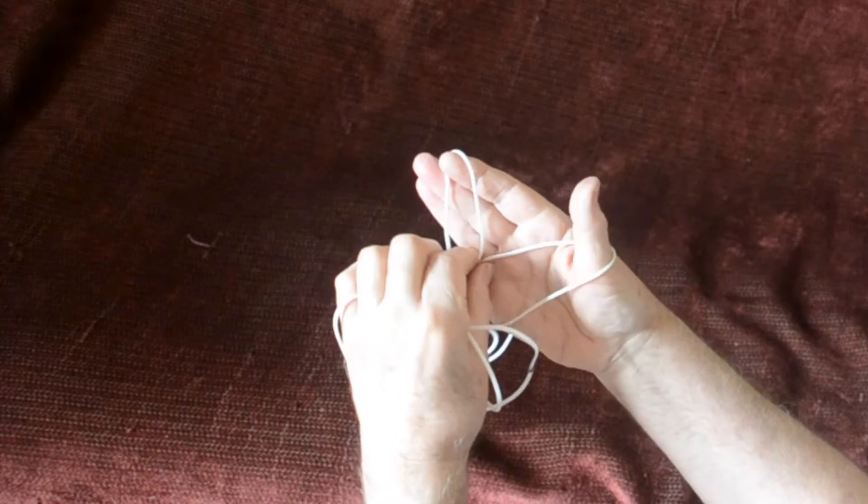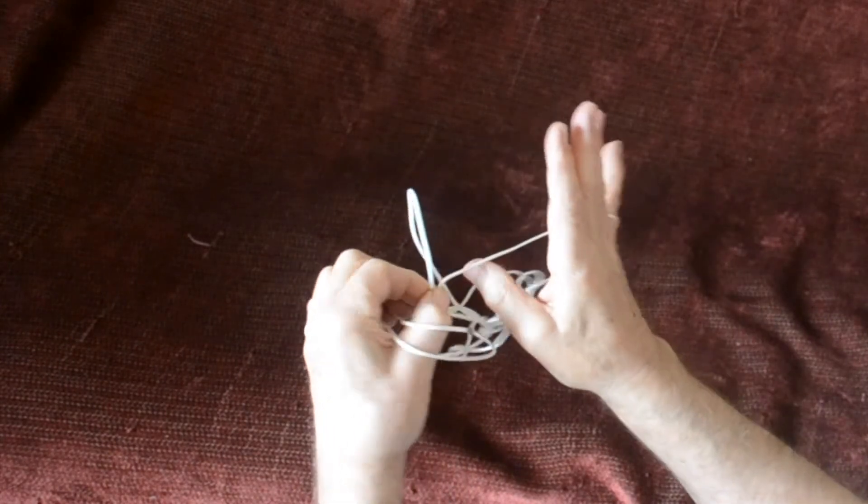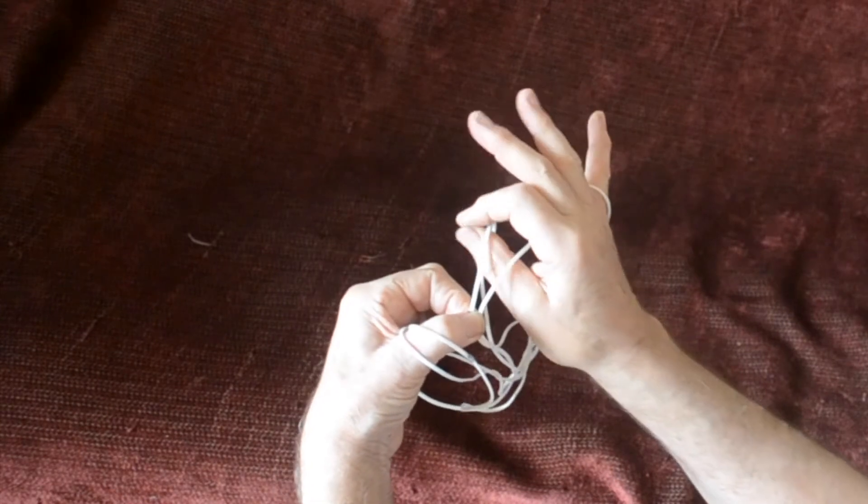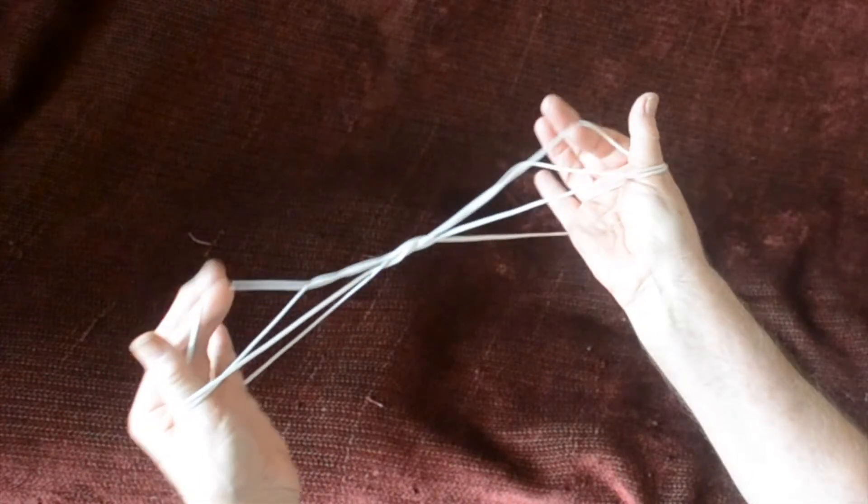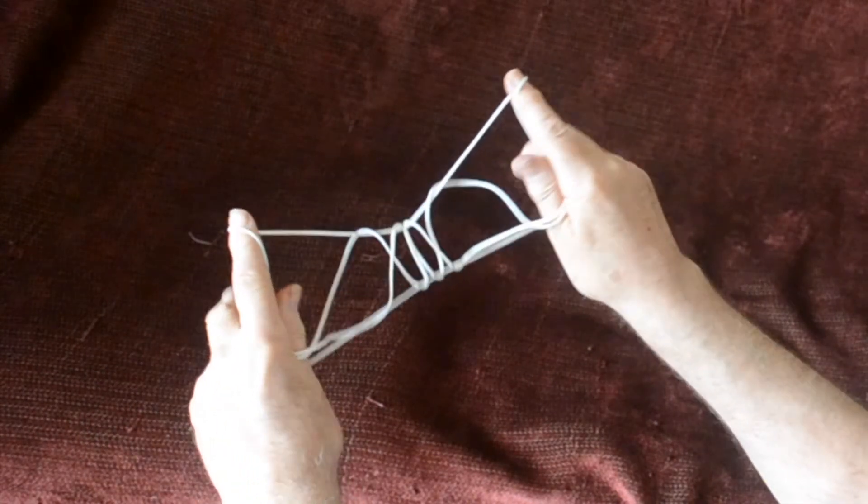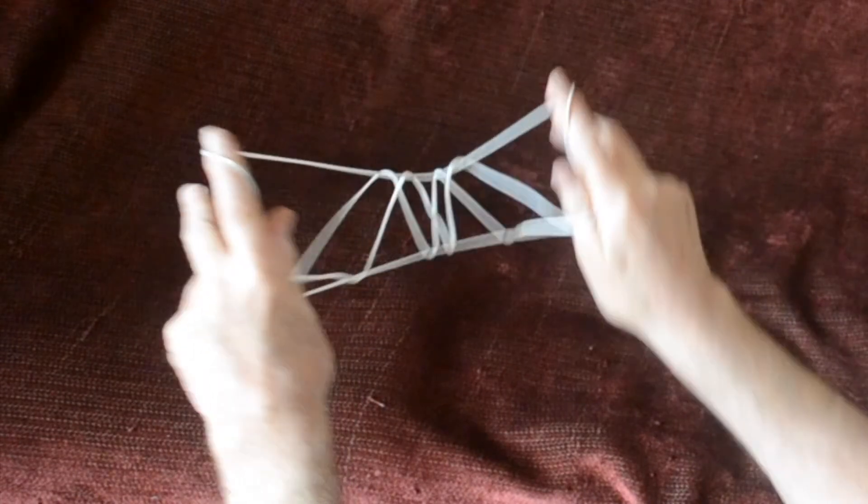So again, take them off. Take thumb and index fingers off. Little finger away from you through the thumb loop. The thumb goes through the thumb loop and the former index string away from you. Now this time, indices under the far thumb string, press thumbs against the side of the finger, turn palms away and you should have four diamonds again.